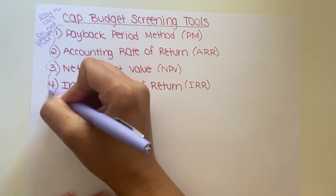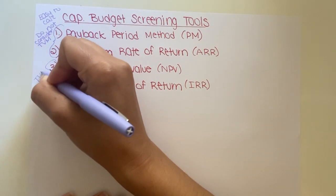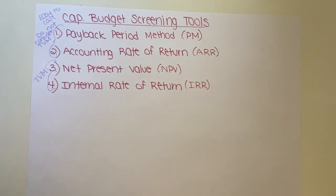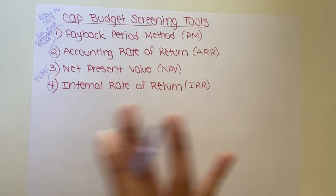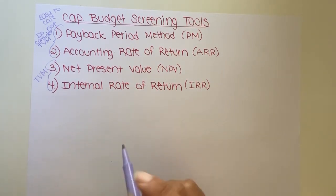The last two formulas consider the time value of money. If you're wondering what the time value of money is — remember last semester when we did bonds and calculated the issue price of bonds using those present value tables? We'll revisit that in this chapter when we get to the last two formulas.